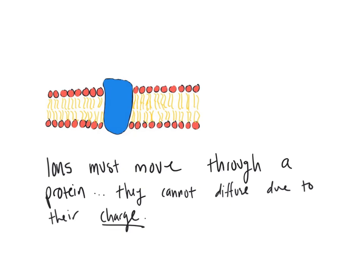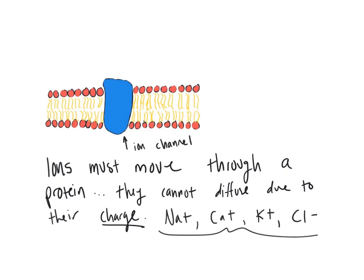Some commonly used ions inside our bodies are sodium, calcium — both positively charged — potassium, also positively charged, and chlorine, which is negatively charged. All of these ions are commonly seen on the AP exam, usually as an example of facilitated diffusion or something along those lines, which we'll get into in a later video.